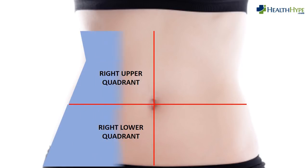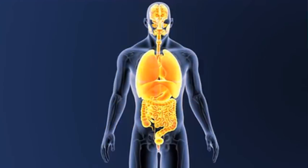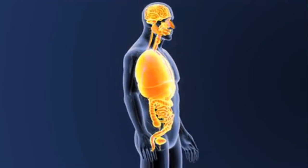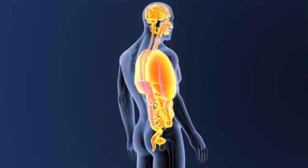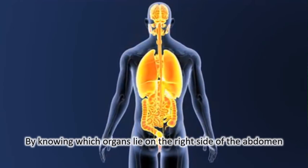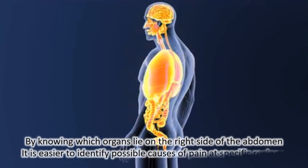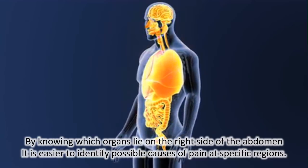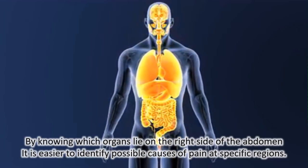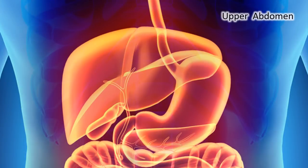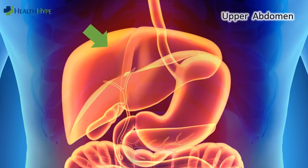For the purpose of this video on right-sided abdominal pain, we will only focus on the causes of pain emanating from the right side of the abdomen. Most of the abdomen is occupied by the digestive organs. By knowing the specific organs that lie on the right side, the task of identifying the cause of right-sided abdominal pain is made much easier. Let us first look at the right upper quadrant of the abdomen.